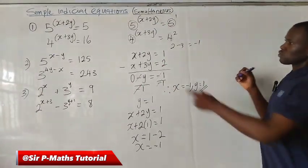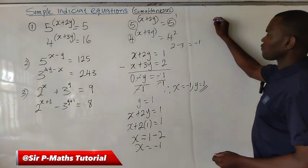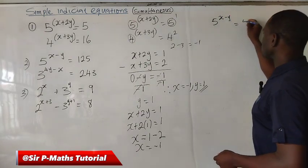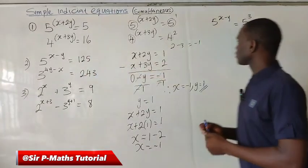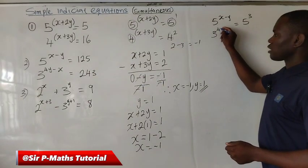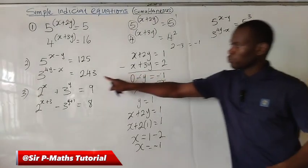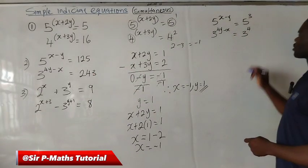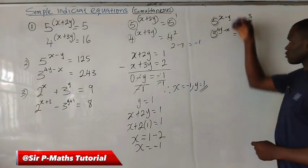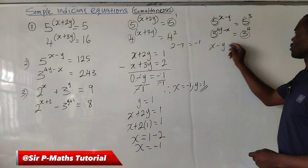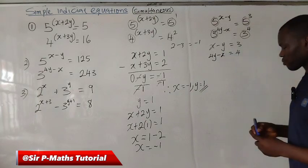Let's move straight to the second one. We are going to do the same — reduce the bases to become equal in each of the equations. I have 5 raised to the power of x minus y equal to 5 raised to the power 3, since 125 equals 5 raised to power 3. For the second one, I have 4y minus x equal to 3 raised to the power of 4, since 3 to the power 4 gives 81. Now that the bases are equal, drop the powers: x minus y equals 3, and 4y minus x equals 4.